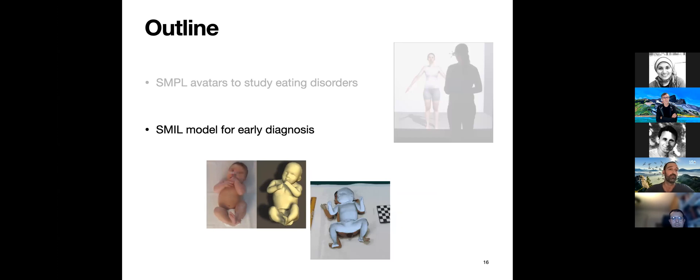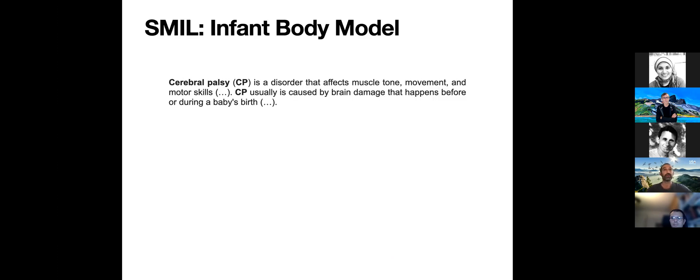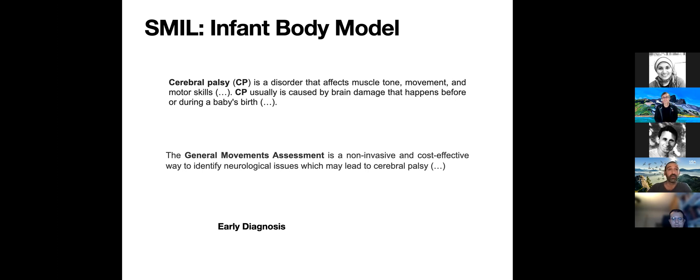I'd like to talk about this second story, the SMIL model we created for early diagnosis. Let me start by explaining what cerebral palsy is. It's a disorder that affects muscle tone, movement, and motor skills. Cerebral palsy is usually caused by brain damage that happens before or during a baby's birth. What's interesting is that the General Movements Assessment is a non-invasive and cost-effective way to identify neurological issues which may lead to cerebral palsy. We're targeting early diagnosis because this leads to early therapy, which is shown to be effective and diminish the effects of cerebral palsy. If we can do early diagnosis, we should do it with this non-invasive and cost-effective system.